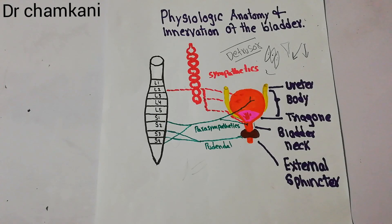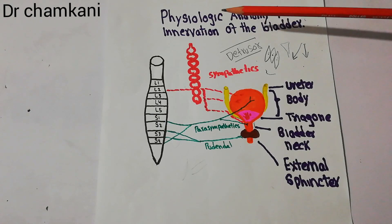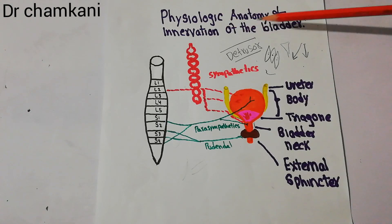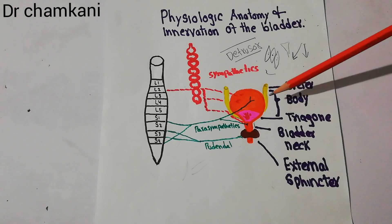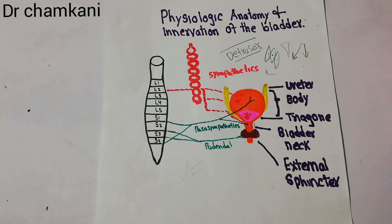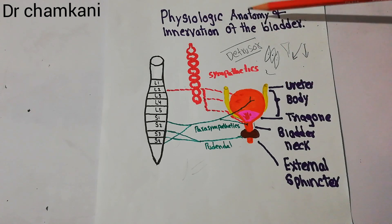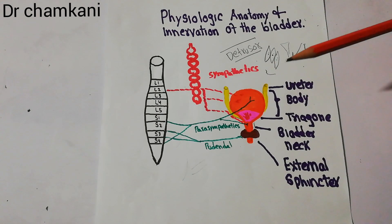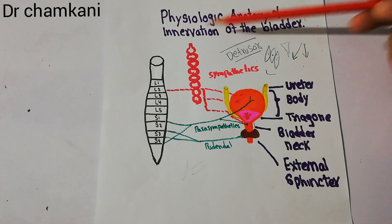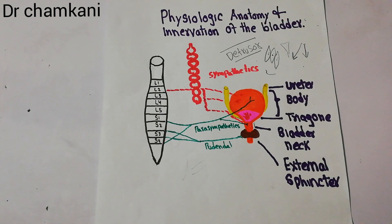In this lecture we will talk about the physiologic anatomy and innervation of the bladder, as we have started urine formation. It is now important to discuss the urinary bladder as well. In this lecture specifically we will talk about the physiologic anatomy of the urinary bladder, and in the next lecture we will talk about the innervation of the bladder.